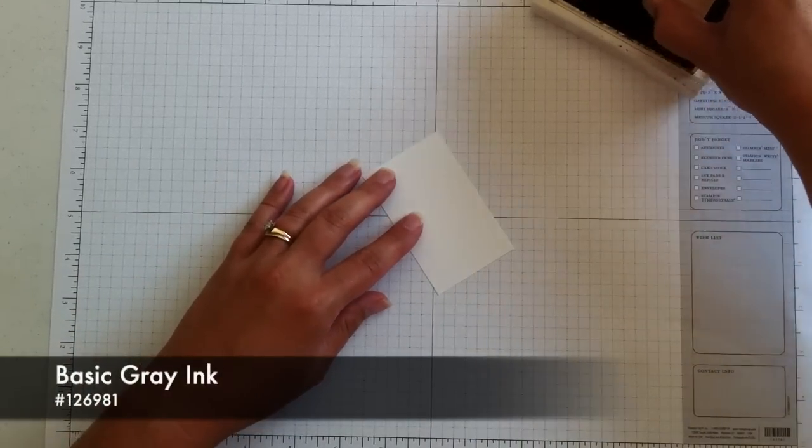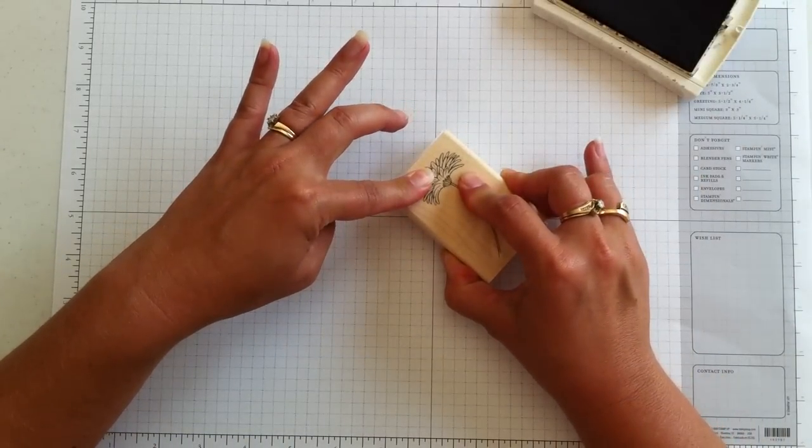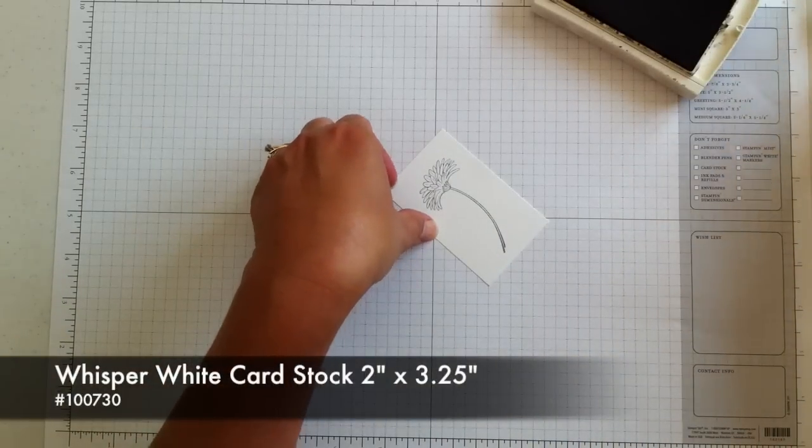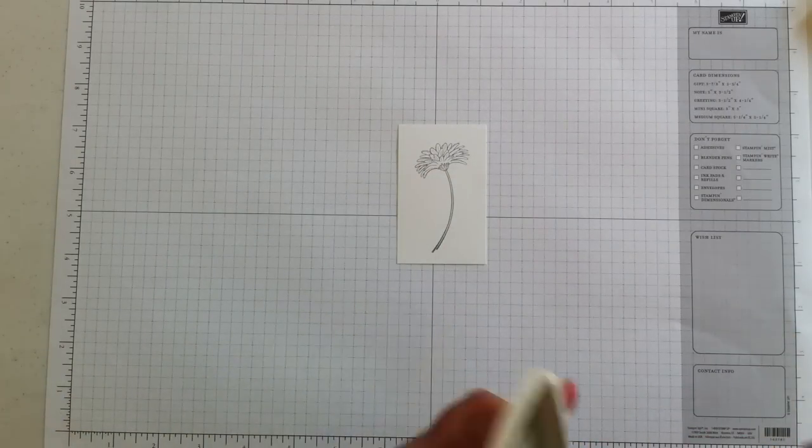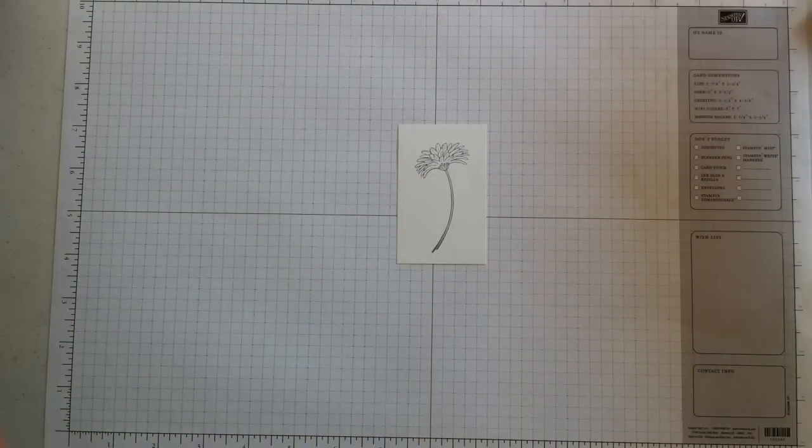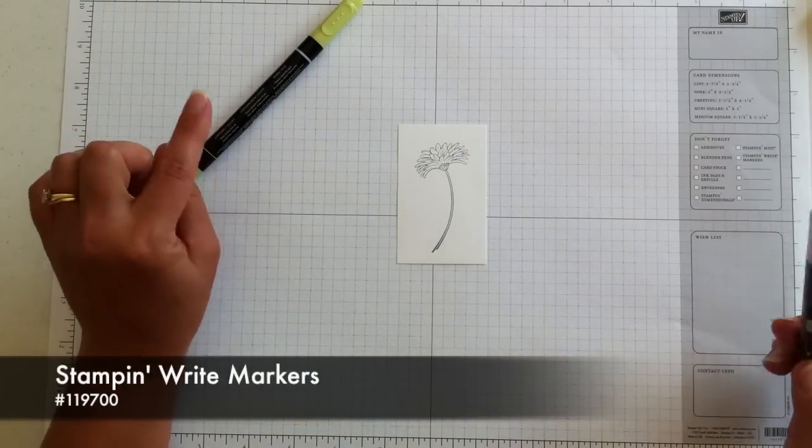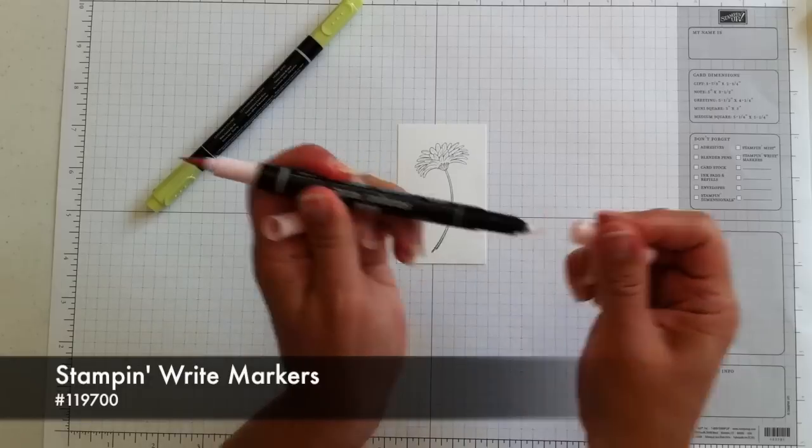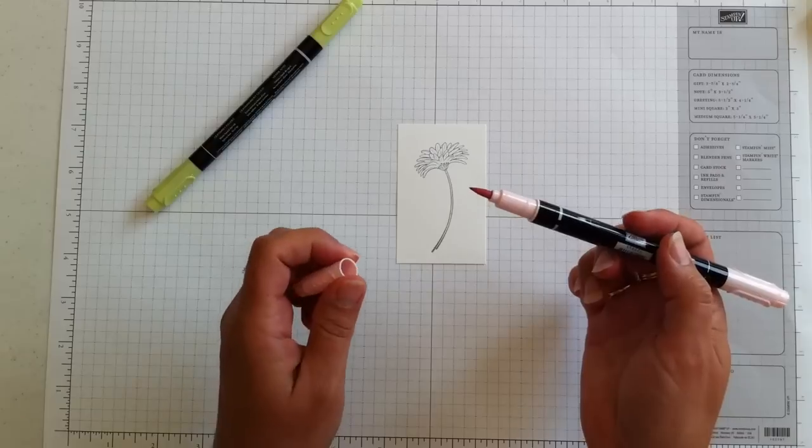I'm inking this up on my basic gray ink pad. And then I'm going to stamp it right down on a piece of Whisper White cardstock that is 2 inches by 3 1⁄4 inches. And I'm going to color with pink pirouette and certainly celery. So I'm just going to use the brush end. Each of our markers has a brush end and a fine point end. Most of the time I use the brush end.